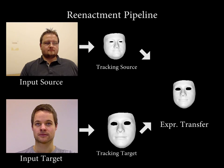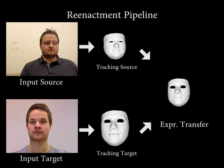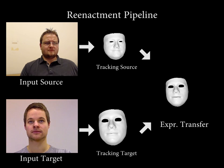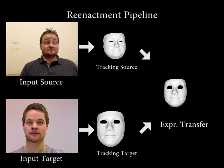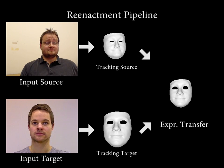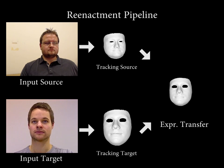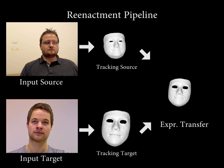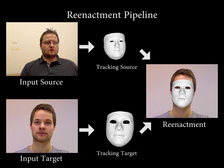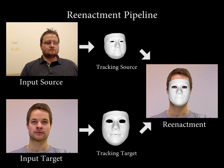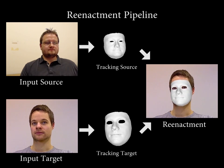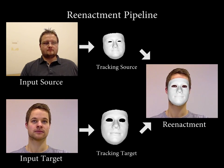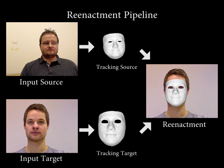Our system reconstructs and tracks both source and target actors using a dense photometric energy minimization. Using a novel subspace deformation transfer technique, we transfer the expressions from the source to the target actor. This allows us to obtain a modified face template of the target actor according to the expressions of the source actor. We now re-render the modified face on top of the target sequence in order to replace the original facial expressions.